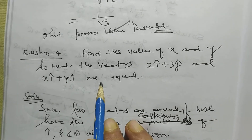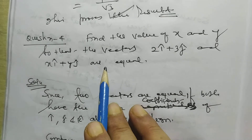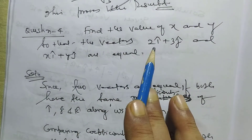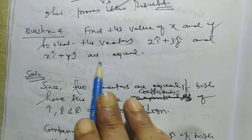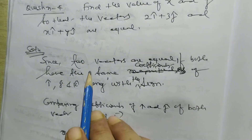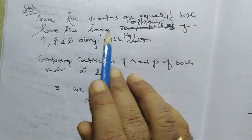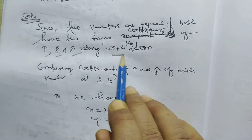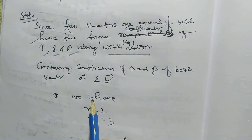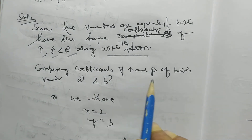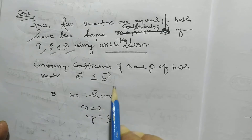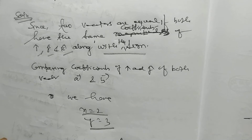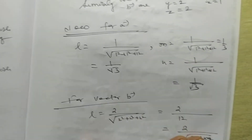Find the value of x and y so that the vectors 2i + 3j and xi + yj are equal. Since two vectors are equal if both have the same coefficients of i-cap, j-cap, and k-cap, comparing the coefficients of i and j of both vectors, we have x = 2 and y = 3. In this way, we can solve this type of problem.